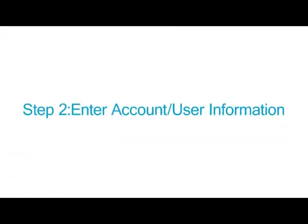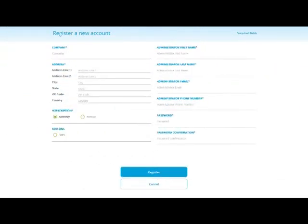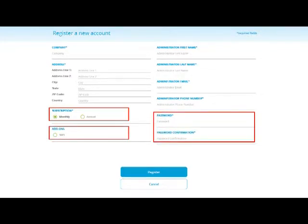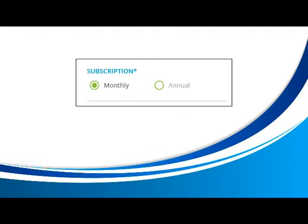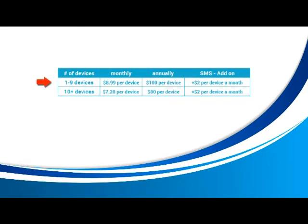Step 2: Enter Account and User Information. Most of Step 2 is pretty straightforward, as it's mostly filling in your required information. But to get a better understanding of Step 2, I do want to explain subscription, add-on, and password in greater detail. Let's begin with subscription. Traceable Live offers the convenience of choosing between an annual subscription or a monthly subscription for your Traceable Live devices. For the best value, we recommend an annual subscription. For 9 or fewer devices, each device will cost $8.99 monthly or $100 annually. For 10 or more devices, each device will cost $7.20 monthly or $80 annually. Choosing an annual subscription will be the best value for your money and the most convenient as you only have to pay once a year.